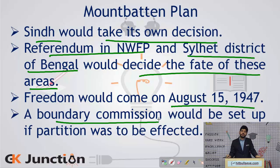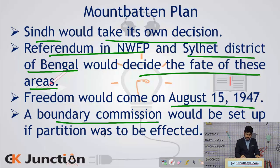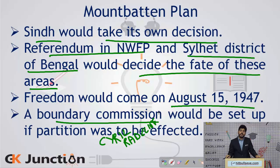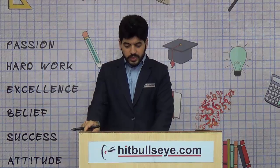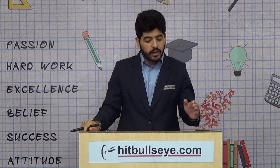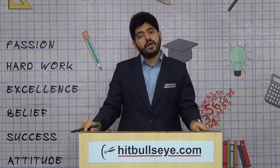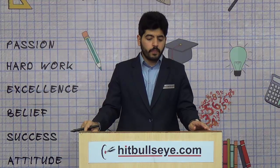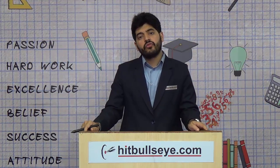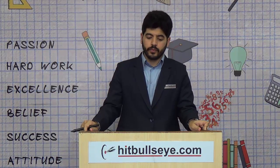If there was to be a partition, a boundary commission would be set up to determine the boundaries of the two dominions. A boundary commission was ultimately set up under the leadership of Cyril Radcliffe, who decided the line which would henceforth be called the international border between India and Pakistan — popularly known as the Radcliffe Line to this day. These are the major provisions of the Mountbatten Plan, which ultimately led to the independence of the country.